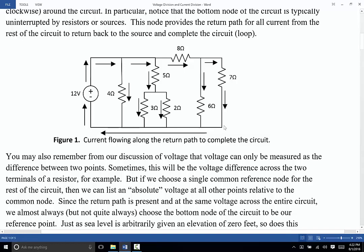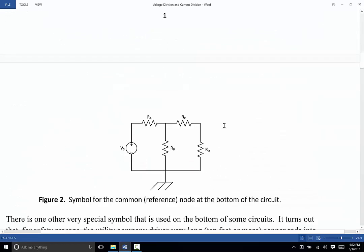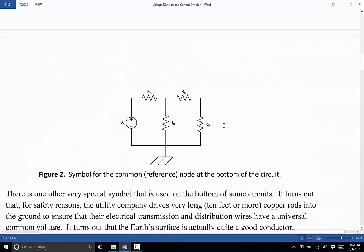Now, if we want to explicitly state that that's the reference node, then we can add a special symbol to it, as we see here in figure 2. So this special signal says, I am explicitly, and really arbitrarily, assigning that node along the bottom to have a reference voltage of 0 volts.